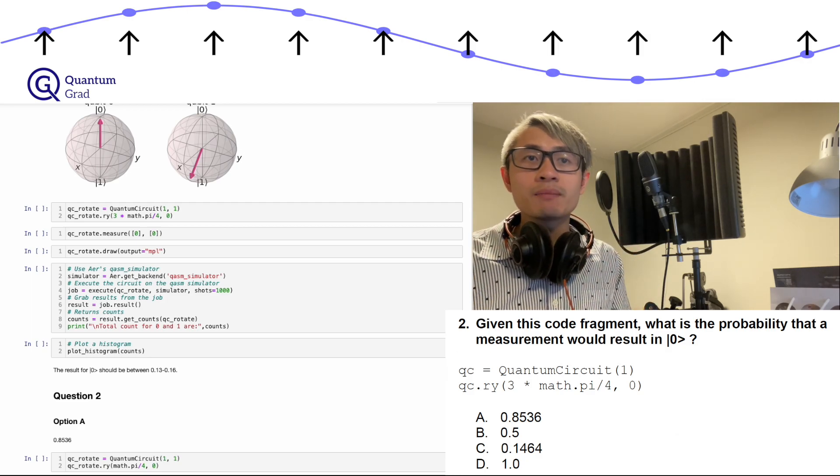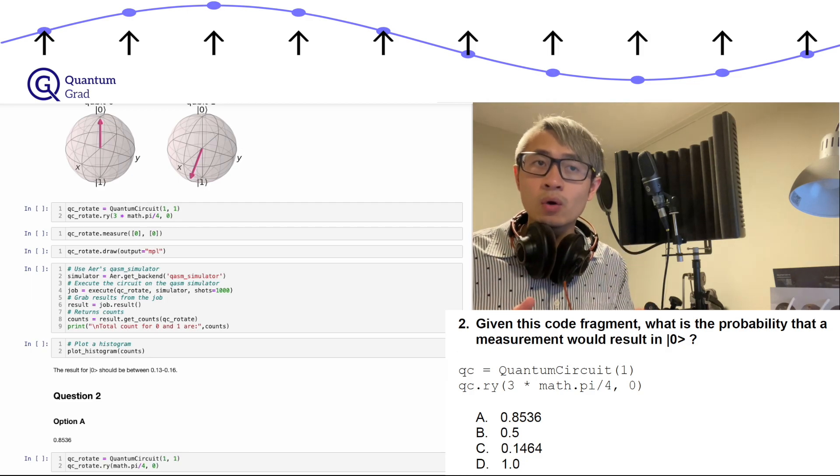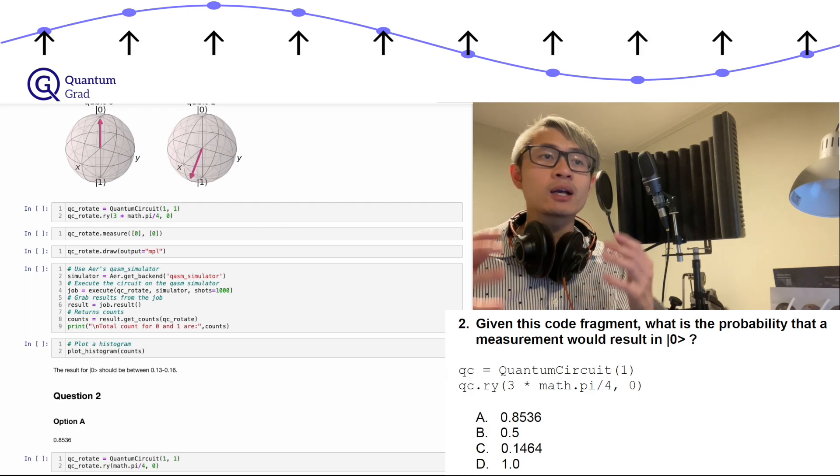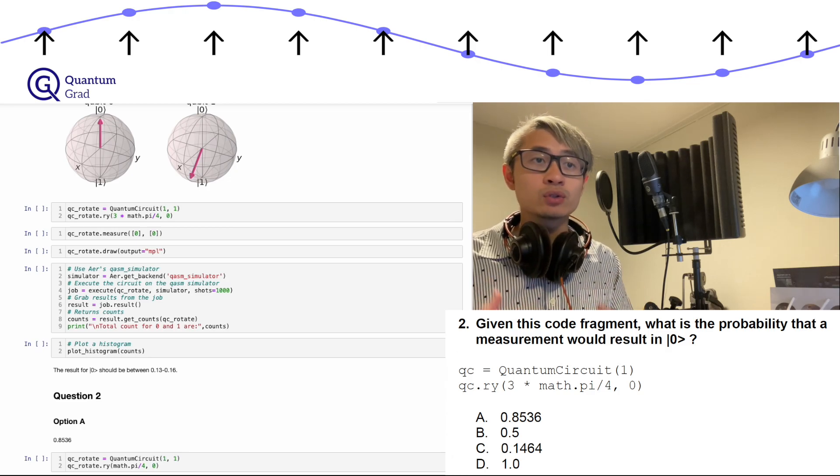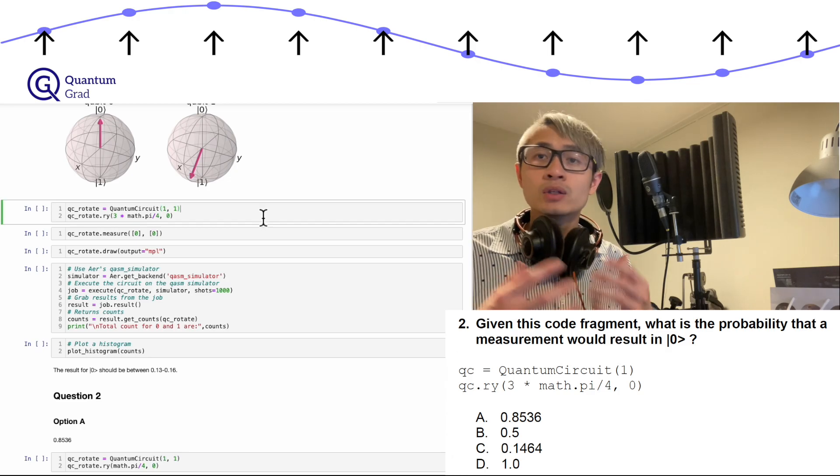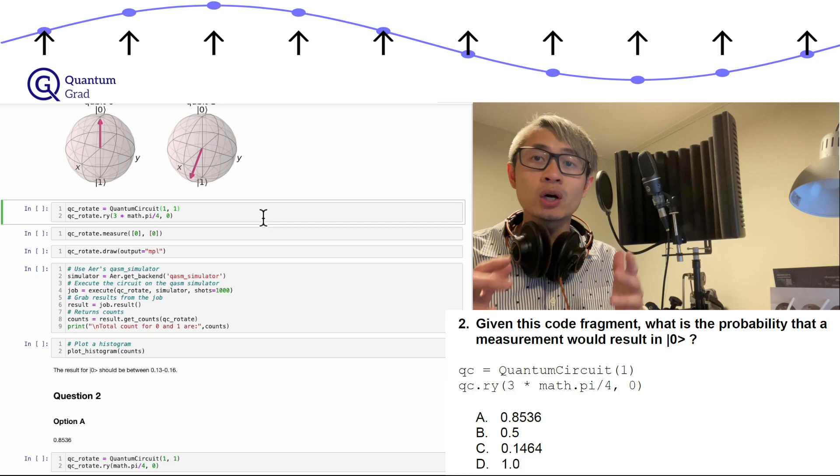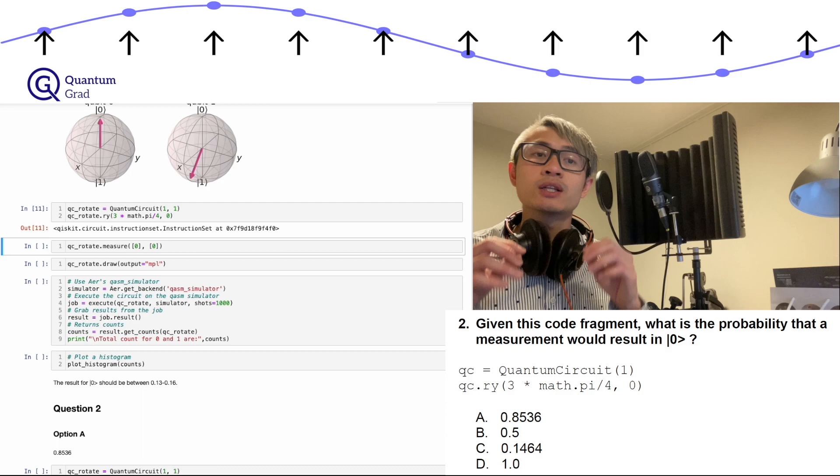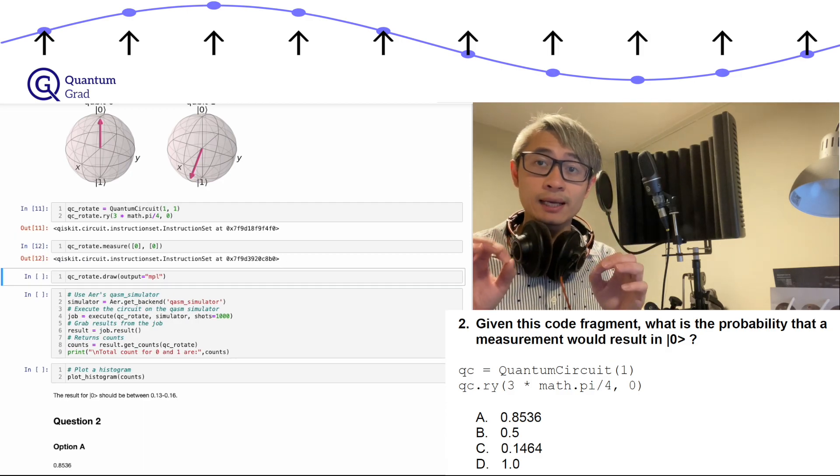As a returned measurement count, the state is being measured so that the quantum state is collapsed into classical information. So we need a classical register with a classical bit to store the measured state. Now we have a quantum register and a classical register, each with one bit of information. That is qc_rotate equals quantum circuit one one. Do the gate operation on qubit zero, which is qc_rotate.ry with this parameter. Then we take the measurement and store the information to classical bit zero.